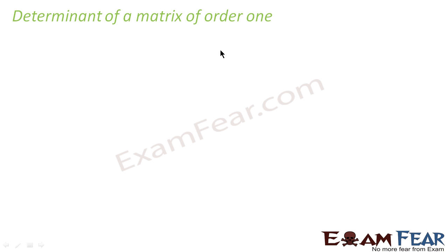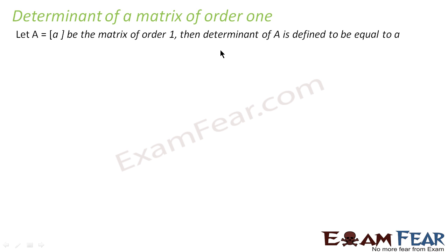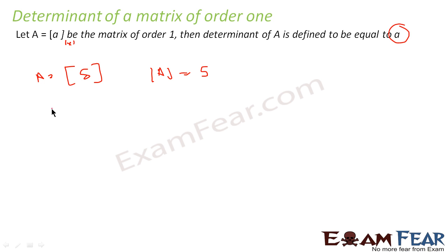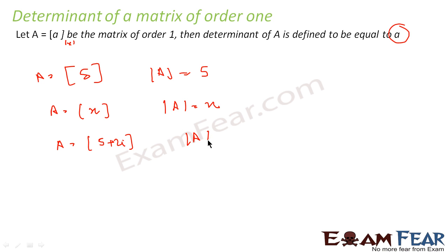Let's learn the determinant of a matrix of order 1×1. If there is a matrix with a single element, it is a 1×1 matrix, and the determinant is equal to that element itself — A only. For example, if you have a matrix with value 5, the determinant is 5; with value x, the determinant is x; with value 5+2i, the determinant is 5+2i.